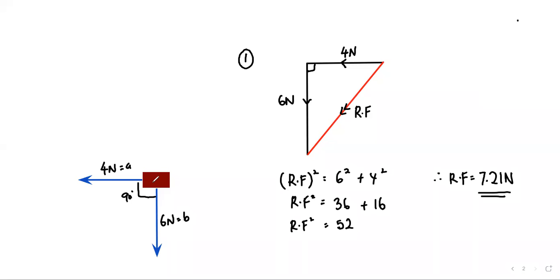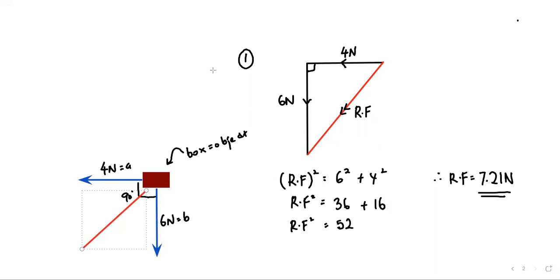Here is another example. We have one object acted on by two forces: force A of 4 newtons and force B of 6 newtons, with an angle of 90 degrees between them. We want to identify where the object will move — it will definitely move in the direction of the resultant force.